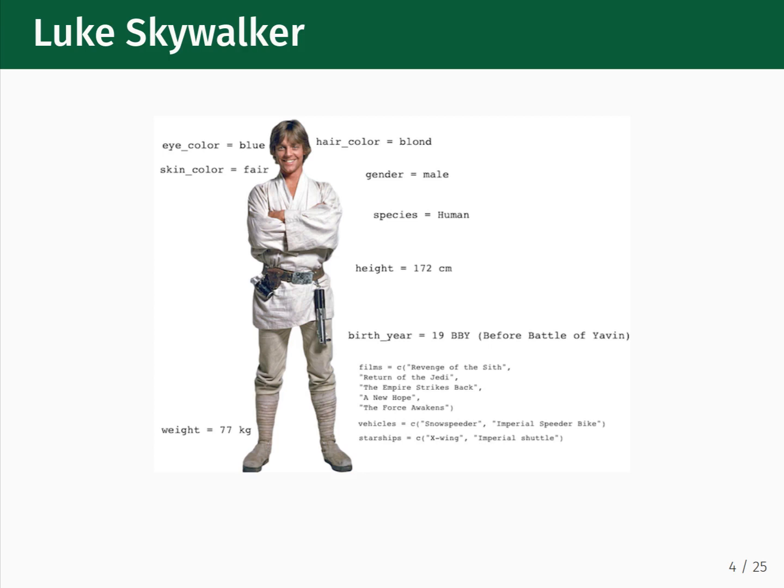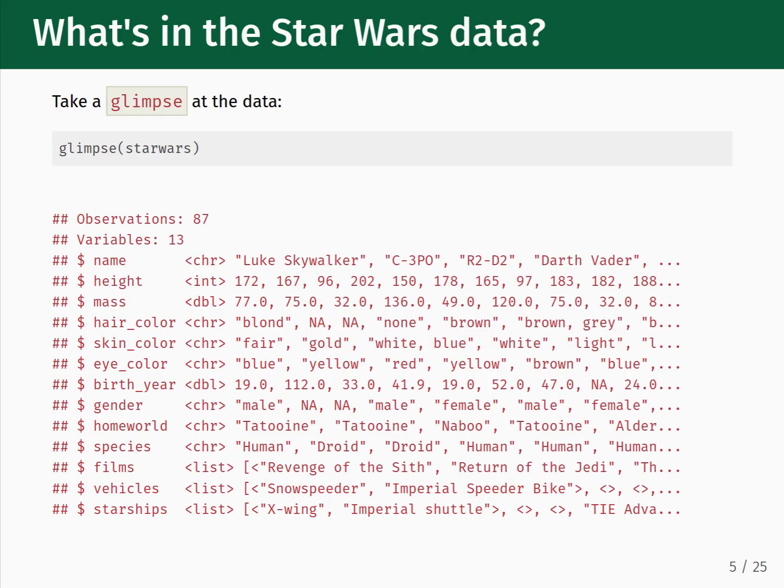Going back to the full dataset, another way that you can inspect the observations and variables is to run the glimpse command. This transposes the table, so now the columns are shown as rows. This can be convenient when you are working with a dataset that has many columns.